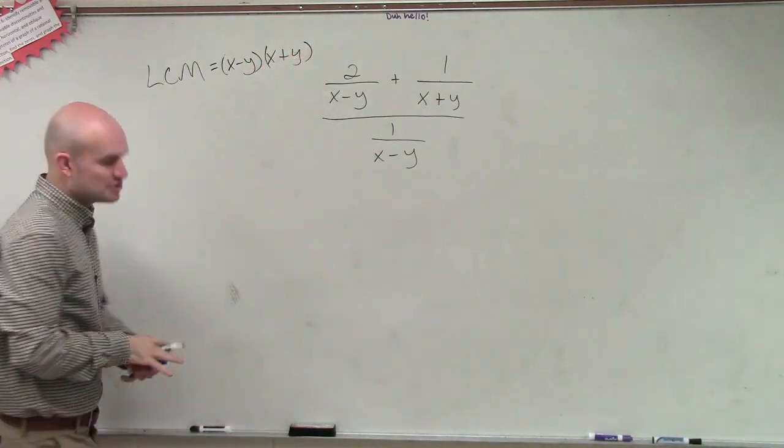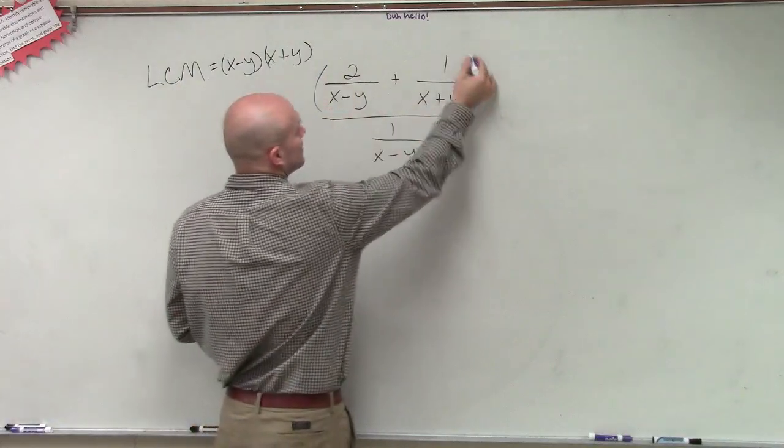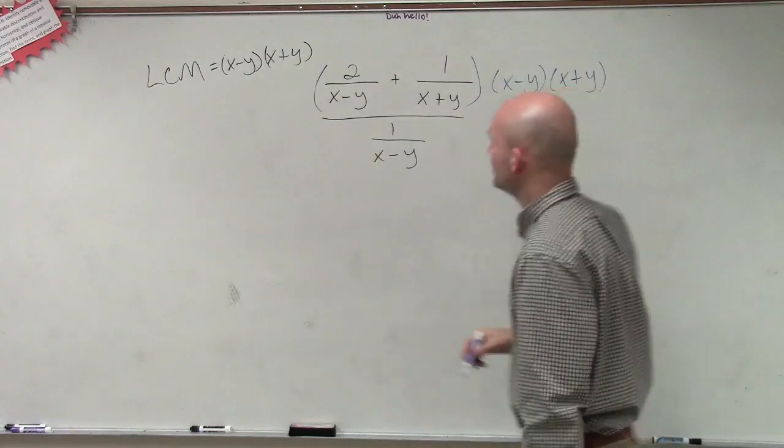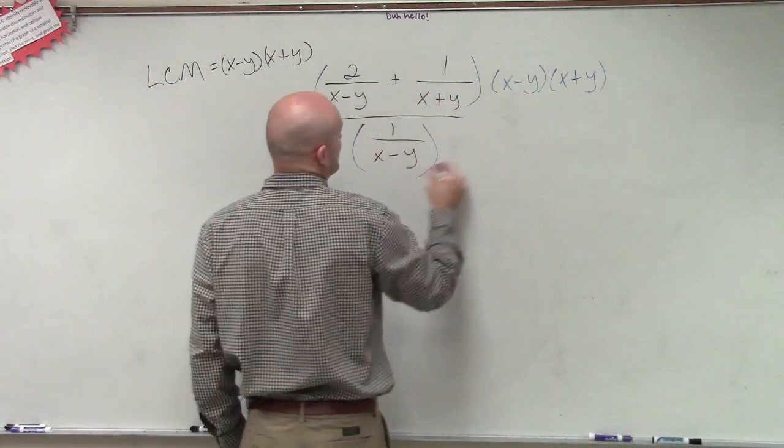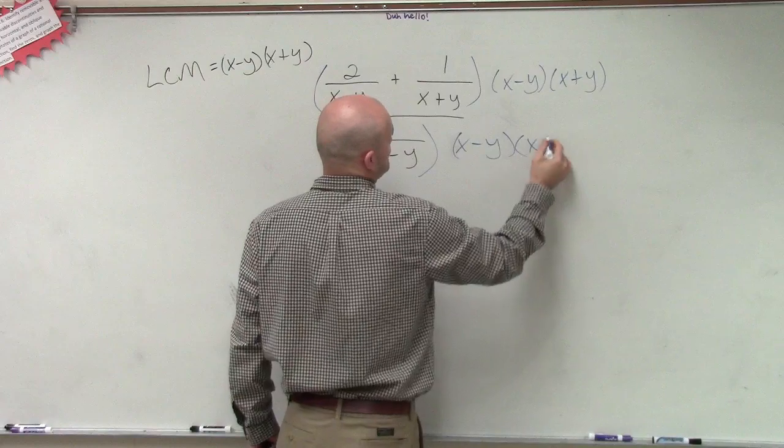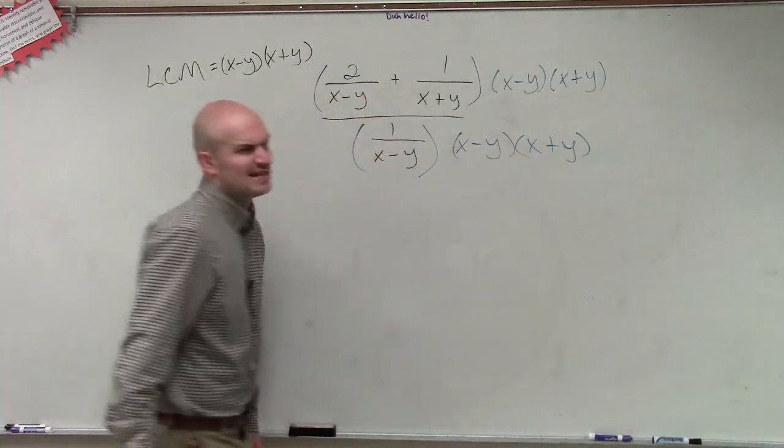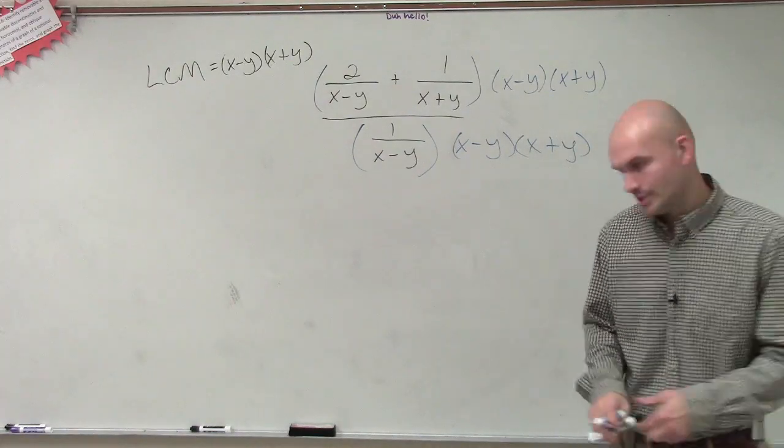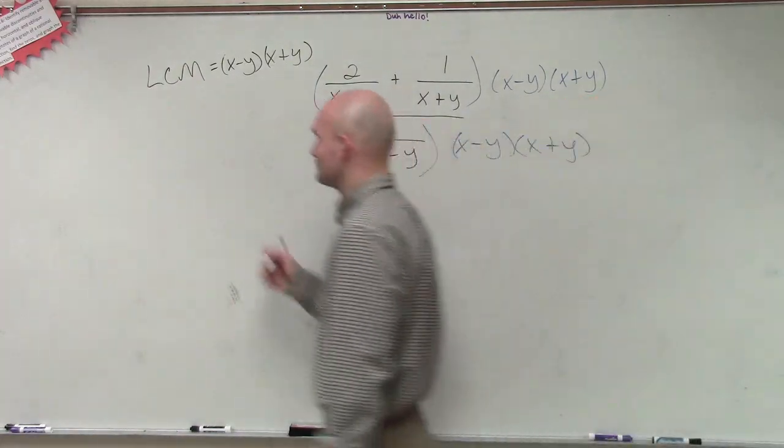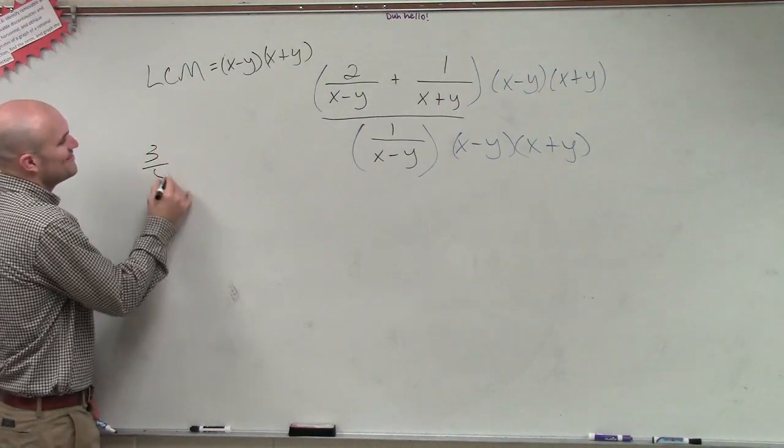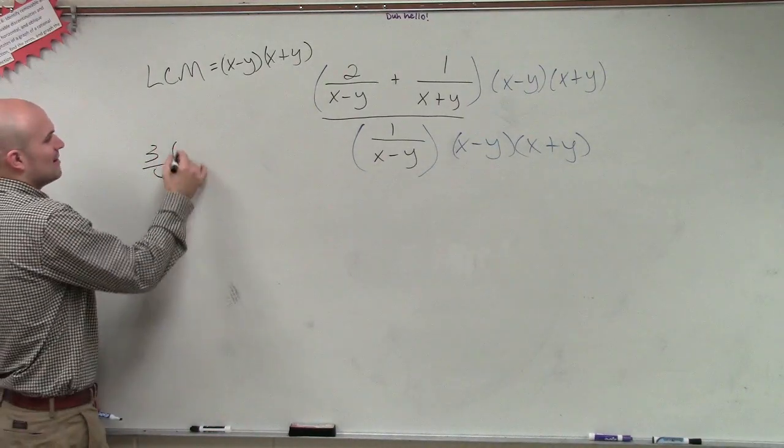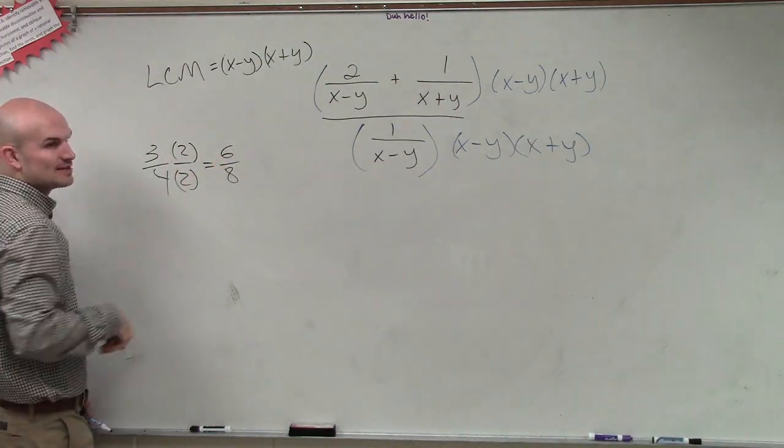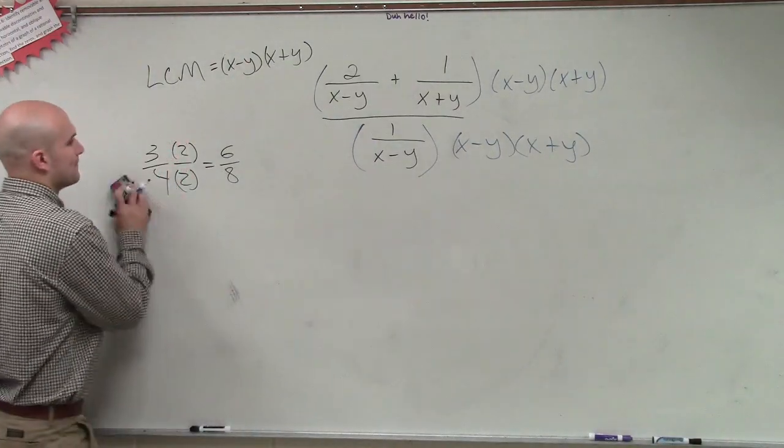So what I'm going to do, then, ladies and gentlemen, is I am going to now multiply my numerator times x minus y x plus y. And I'm going to multiply my denominator by x minus y times x plus y. Does everybody understand that these are going to be equivalent equations? Everybody agrees with that? So if you had 3 fourths and you multiplied by 2 over 2, you would get 6 eighths. Is 6 eighths the same thing as 3 fourths? Of course it is. Good job.